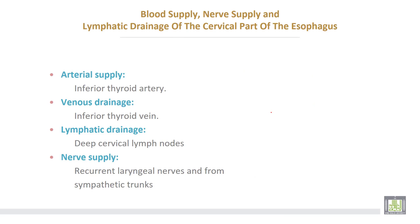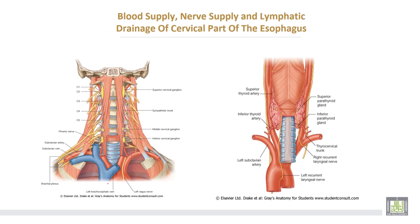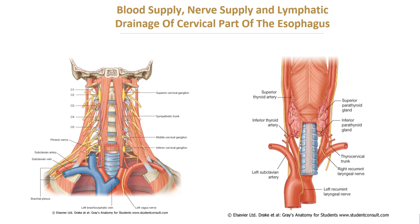The blood supply and nerve supply for the cervical part of the oesophagus: arterial supply comes from the inferior thyroid artery; venous drainage is directed to the inferior thyroid vein; lymphatic drainage goes to the deep cervical lymph nodes; nerve supply is from the recurrent laryngeal nerves and sympathetic trunks.